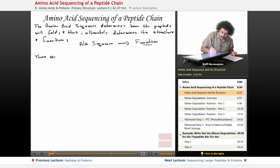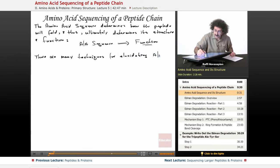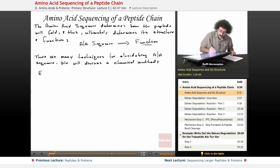Well, there are many techniques for elucidating amino acid sequence. We will discuss a chemical method still used in laboratories. It is called the Edman degradation.